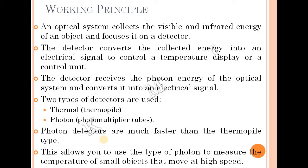An optical system collects visible and infrared energy from an object and focuses it on a detector. The detector converts the collected energy into an electrical signal to control the temperature display. The detector converts the electrical signal to control temperature and receives the photon energy of the optical system.